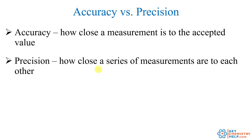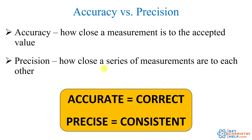When it comes to evaluating measurements, we can evaluate them according to two different criteria. The first is the accuracy of the measurement — that's how close the measurement is to the target, to the accepted value. The other is the precision of that measurement — that's how close a series of measurements are to one another. Another way to think about it: accuracy is how correct your answer is, how close to the true value. And precision is how consistent you are.